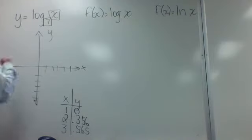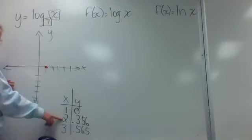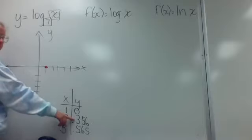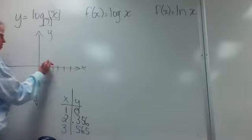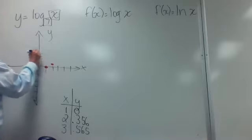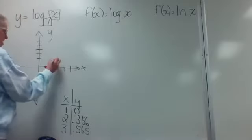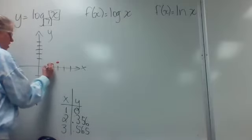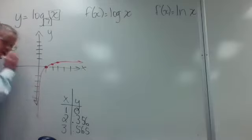So: (1, 0), to the right 2 up 0.35, to the right 3 up 0.56. There's the shape of the logarithmic function. All three of these problems are going to have that same shape.